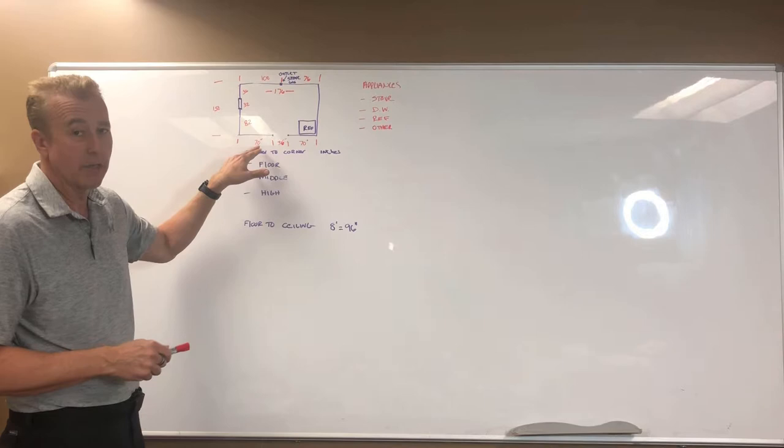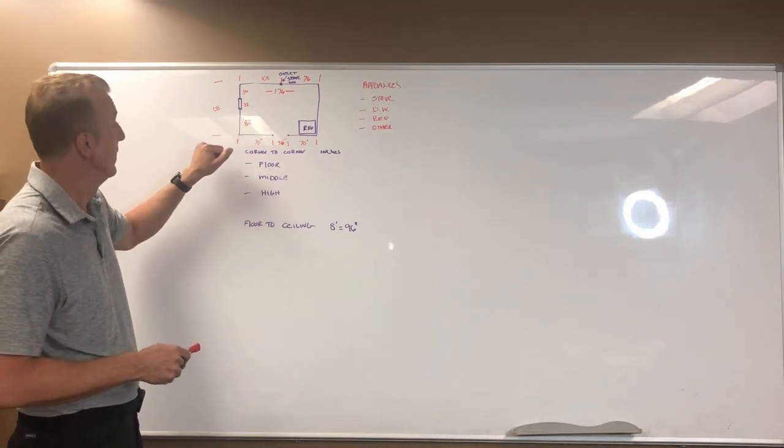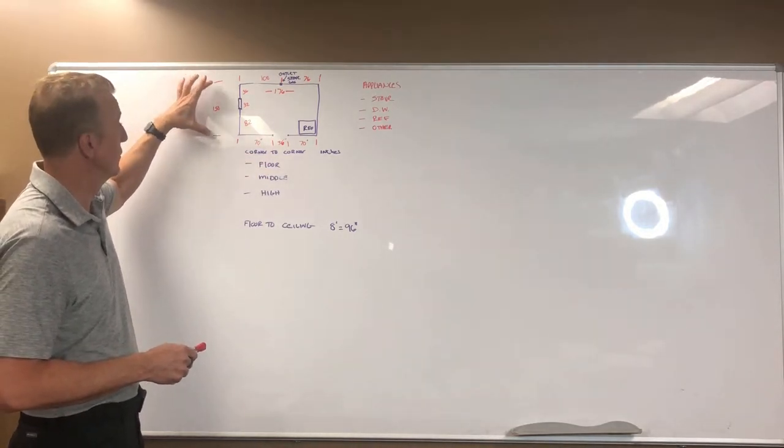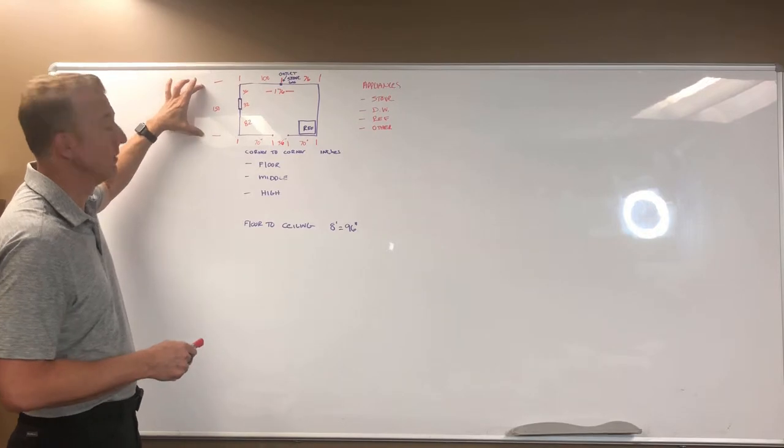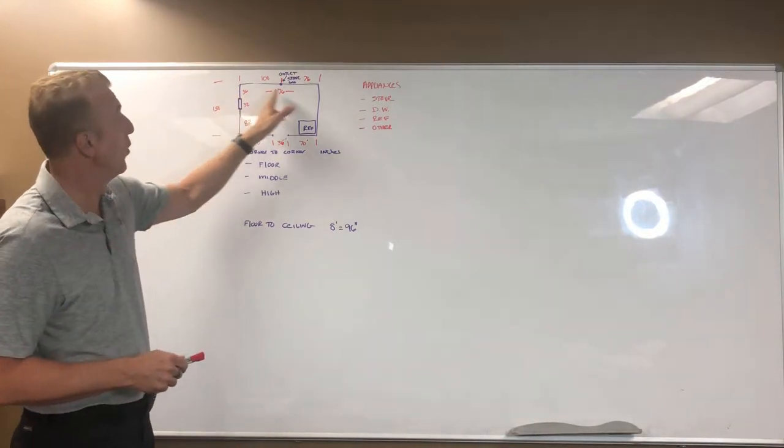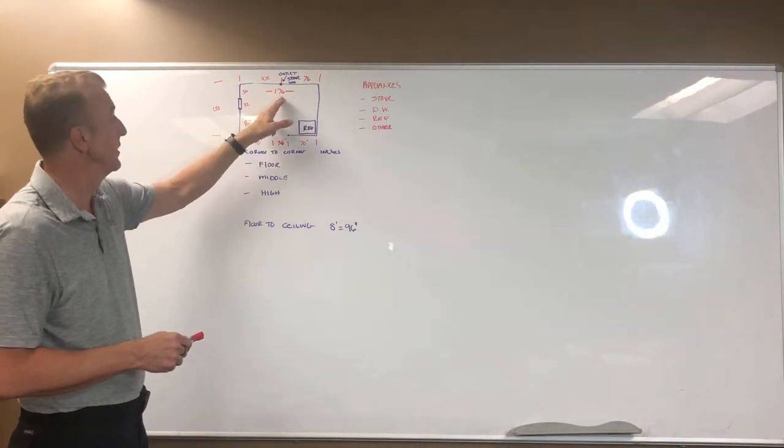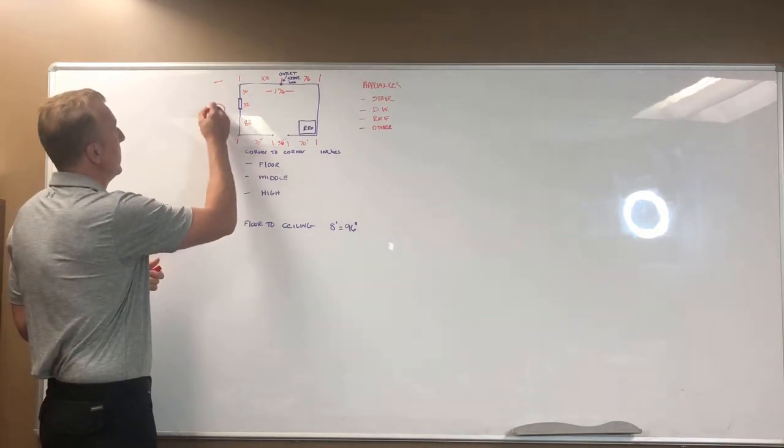I've drawn a real simple rectangular kitchen up here. This particular kitchen measures from corner to corner 150 inches by 176 inches. You can see I've labeled that right here.